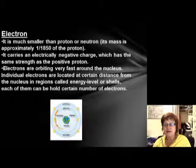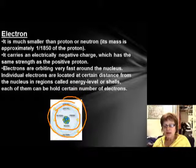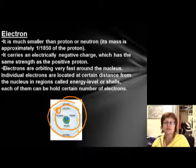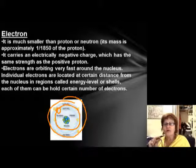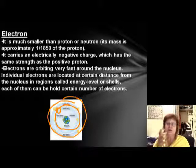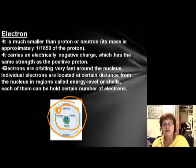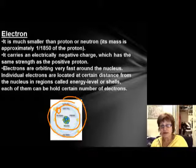The next thing to know is the electrons. Electrons are outside of the nucleus and orbit it on energy levels, or energy shells. The size of the electron is one over 1850, so it's very tiny. When talking about the mass of the atom, the electrons' weight is negligible.